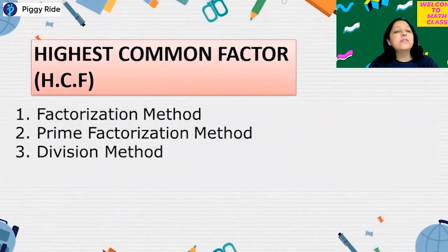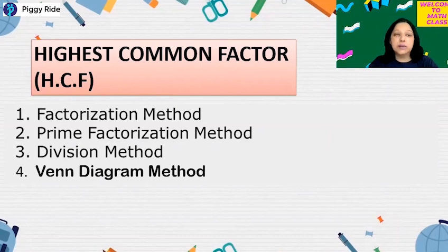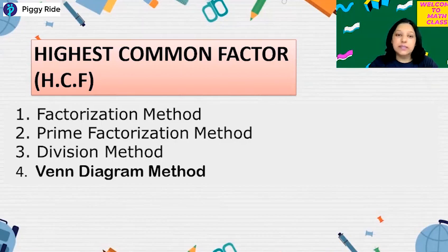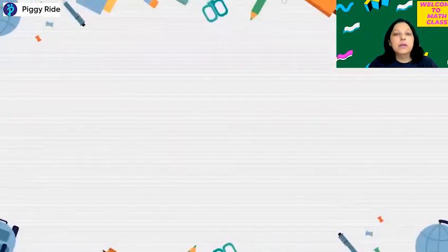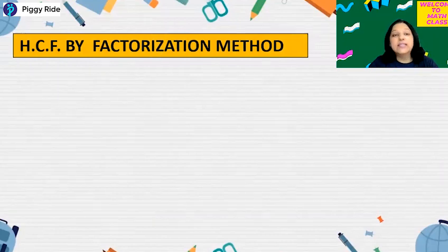We have different methods. We have factorization method, we have prime factorization method, we have division method, and also we can apply Venn diagram method to calculate the HCF or GCF. So let's learn all the methods one by one. First is HCF by factorization method.